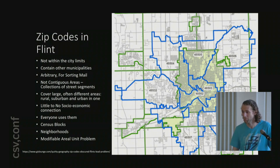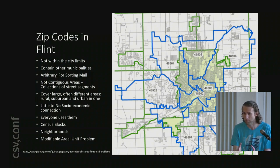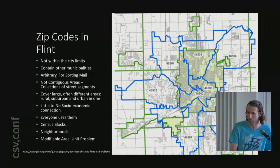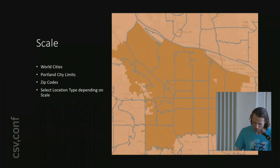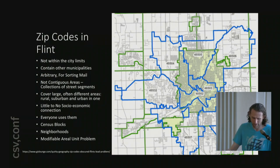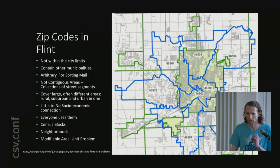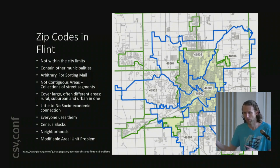Better choices are census blocks and census tracts, which are designed to more accurately represent groups of people. Neighborhoods can work, especially as a communication mechanism — once you understand patterns in your data, it's okay to regroup things differently to communicate, since people sometimes ask why their city is in a grid. This whole problem is called the modifiable areal unit problem — as a geospatial person, you can introduce bias into your data based on how you select your spatial groupings. It's really important to select the right spatial grouping.